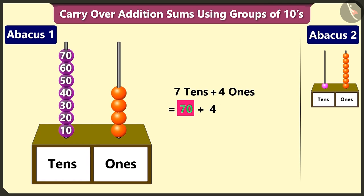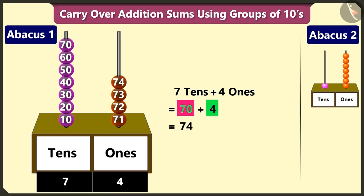Now to add four to seventy, count after seventy: seventy-one, seventy-two, seventy-three, and seventy-four.